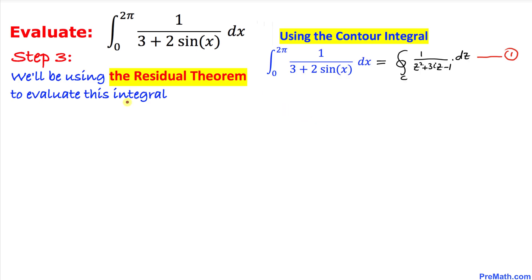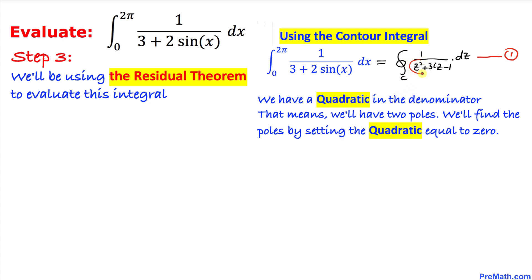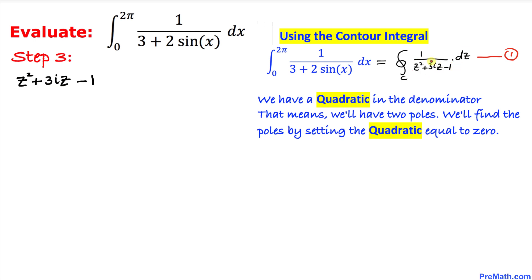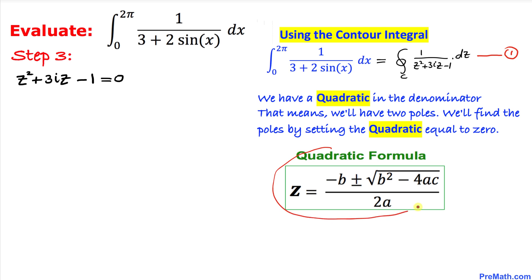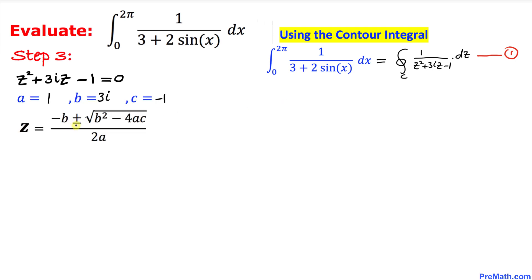We will use the residue theorem to evaluate this integral. The quadratic in the denominator means we have two poles. We find them by setting z² + 3iz - 1 = 0 and applying the quadratic formula, where a = 1, b = 3i, and c = -1.